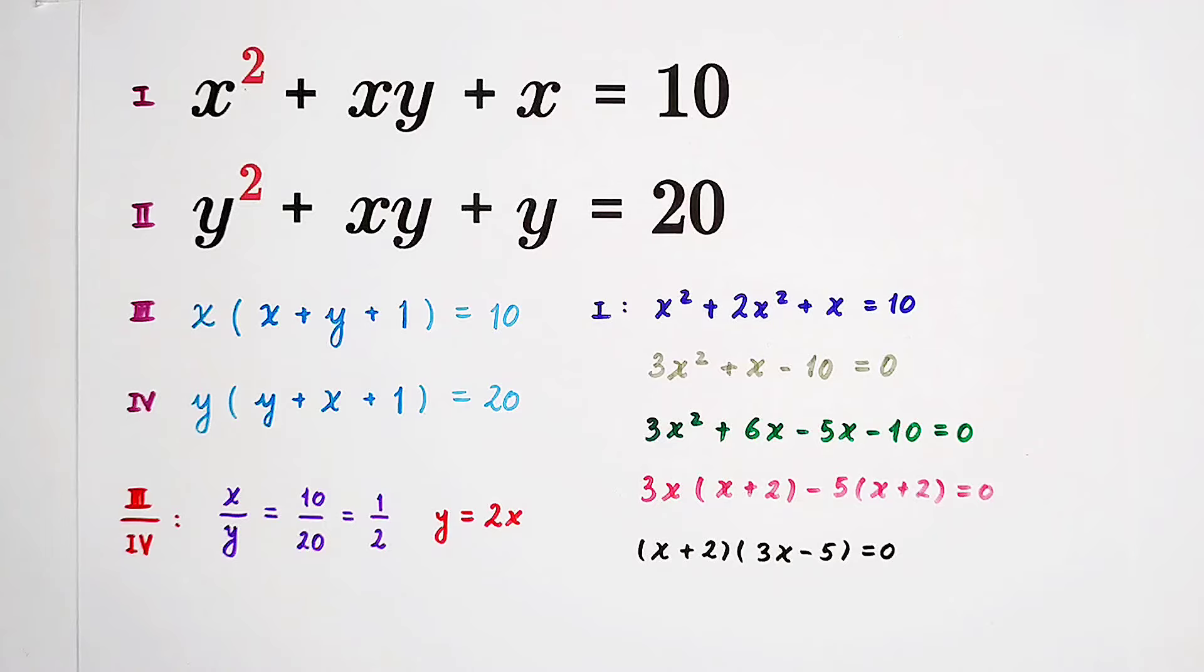Now we have two cases. First case: x plus 2 equals 0. Second case: 3x minus 5 equals 0.